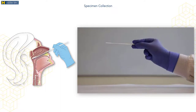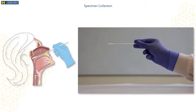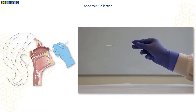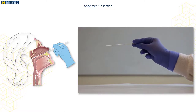Instead, the swab should travel along the floor of the nasal pathway, reaching the break point of the swab to the nostril. Once resistance is felt at the nasopharynx, rotate the swab several times on the nasopharyngeal membrane to allow adequate collection of epithelial cells.